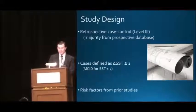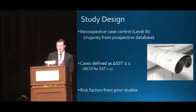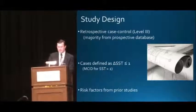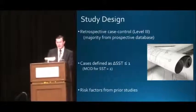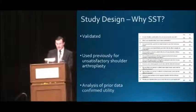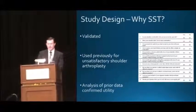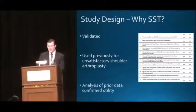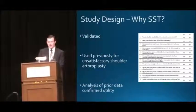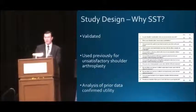The study was a retrospective case control analysis. We defined case patients as those with an improvement of one or less in the SST score, as this is below the minimal clinically important difference for SST in rotator cuff disease. Potential risk factors were identified from the literature prior to data collection. We chose the SST score because it is a validated score that primarily asks about shoulder function, and it has been used previously to define unsatisfactory shoulder arthroplasties. An analysis of prior data from our group showed that this score reliably identified patients who had poor functional improvement by other outcome measures.